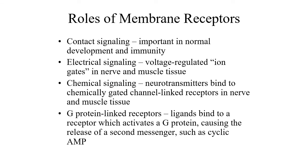Different receptors provide for different processes within cells. Contact signaling involves cells touching one another, which can limit their growth or movement. Electrical signaling is more rare but occurs with the nervous system, where one nerve communicates with another via an electrical discharge. Chemical signaling is one of the more important processes, involving things like neurotransmitters and hormones.